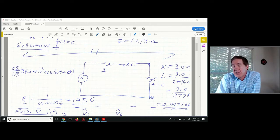You're going to see this number a lot, 377. That's 2π times 60. We take the three ohms, divide through by 377, and this gives us an inductance of 0.007966 Henrys.